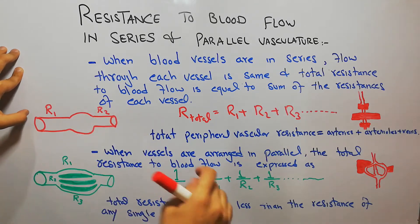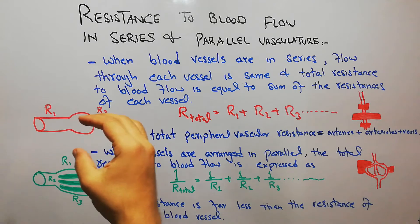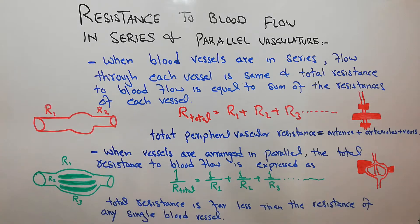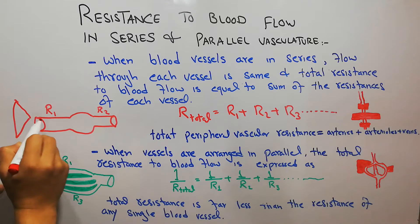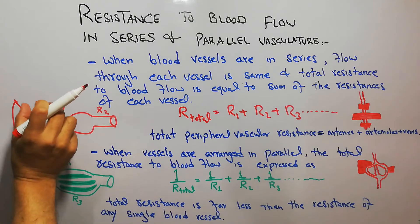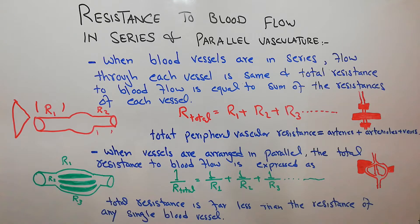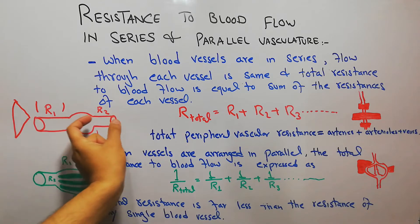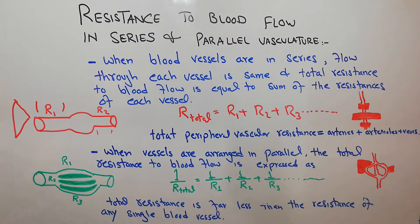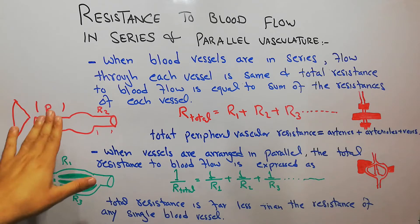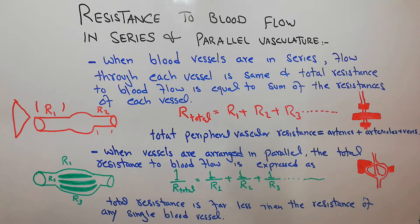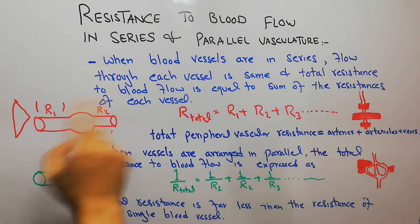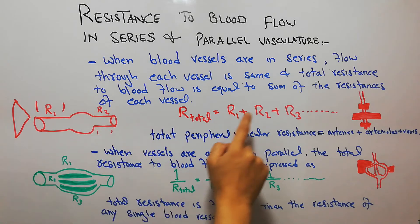For example, suppose these are two vessels attached to each other in series. The amount of blood flowing through the first part of the vessel will also be flowing through the second part. One vessel is R1 and the other is R2. The blood faces the whole resistance in the first vessel and again the whole resistance in the second vessel. So the total resistance equals R1 plus R2.